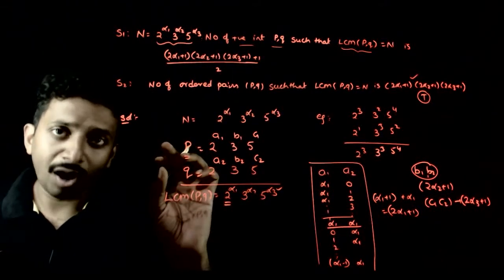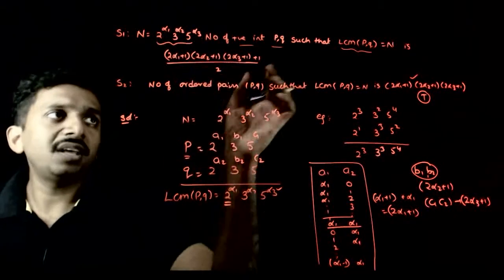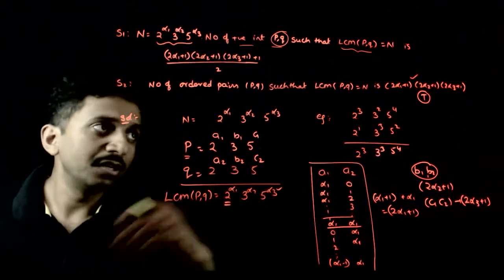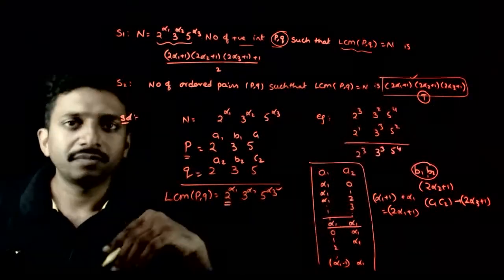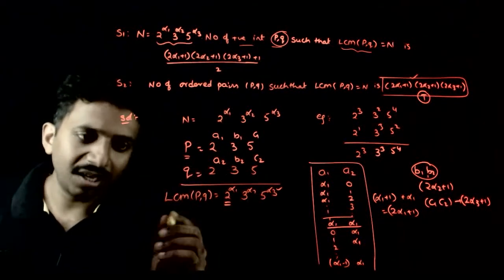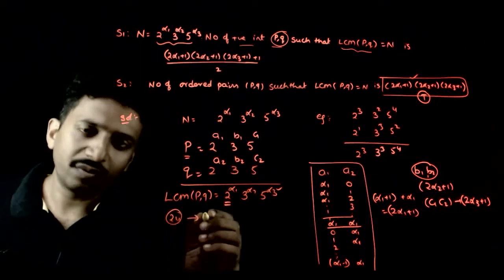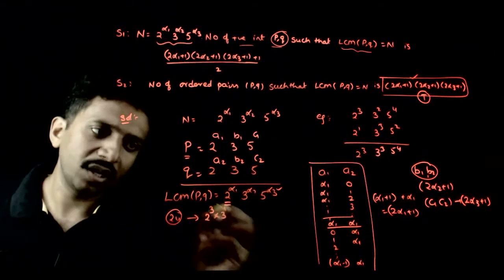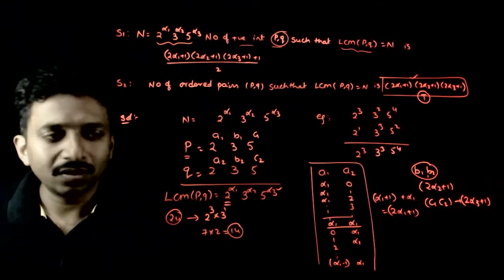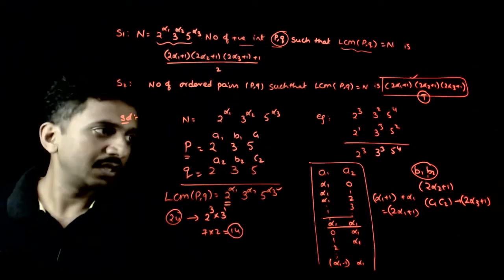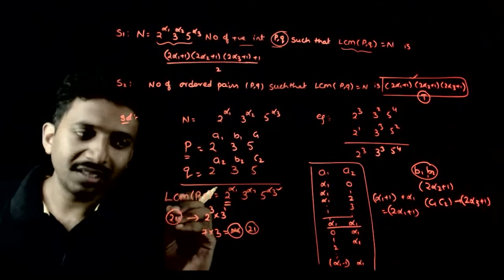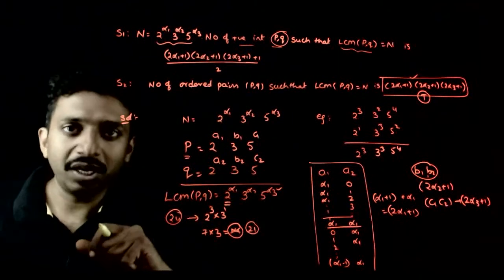Now for Statement 1: I can select ordered pairs p, q in that many ways, but the first statement asks for unordered pairs. The number of ordered pairs is always odd. For example, for n = 24 = 2³ · 3¹, the number of ordered pairs is (2·3+1)(2·1+1) = 7·3 = 21 ways — an odd number.